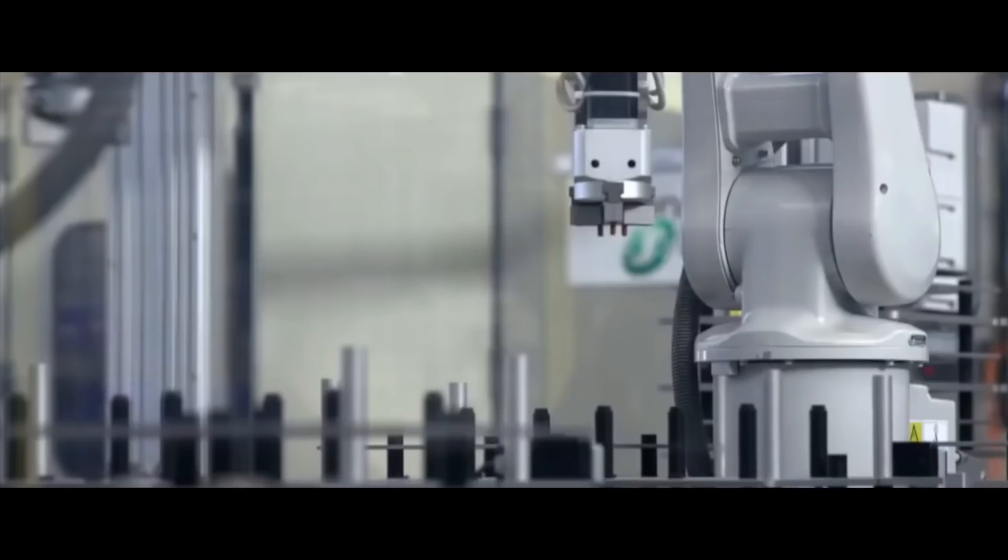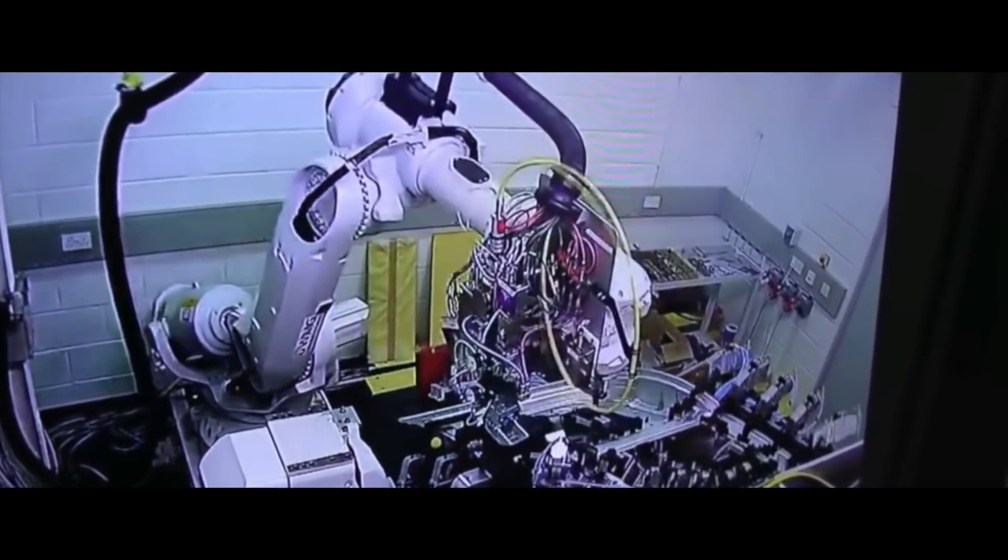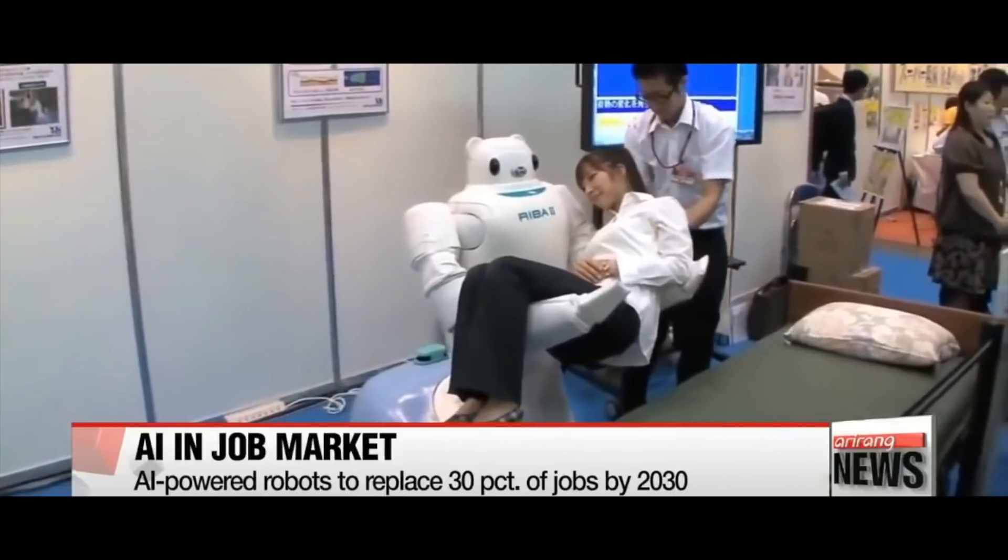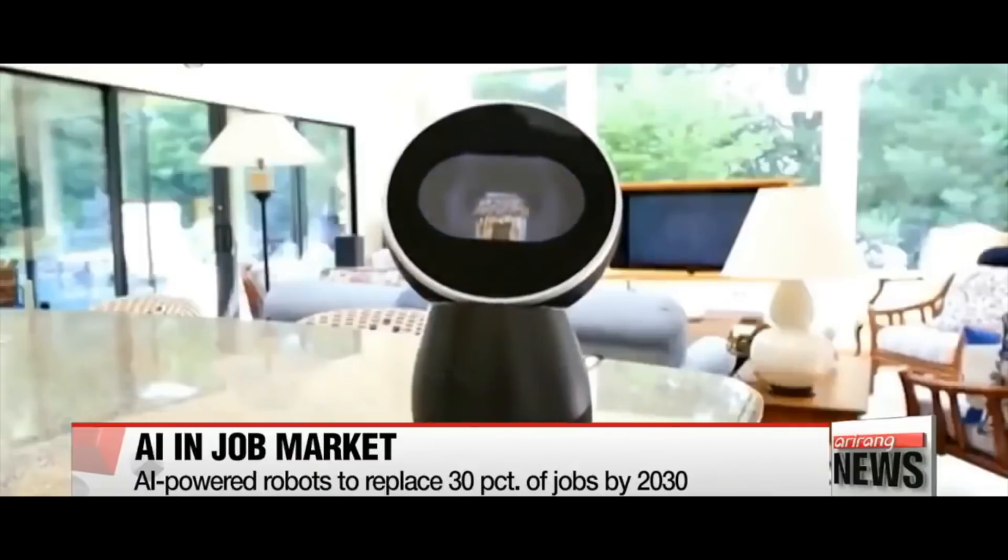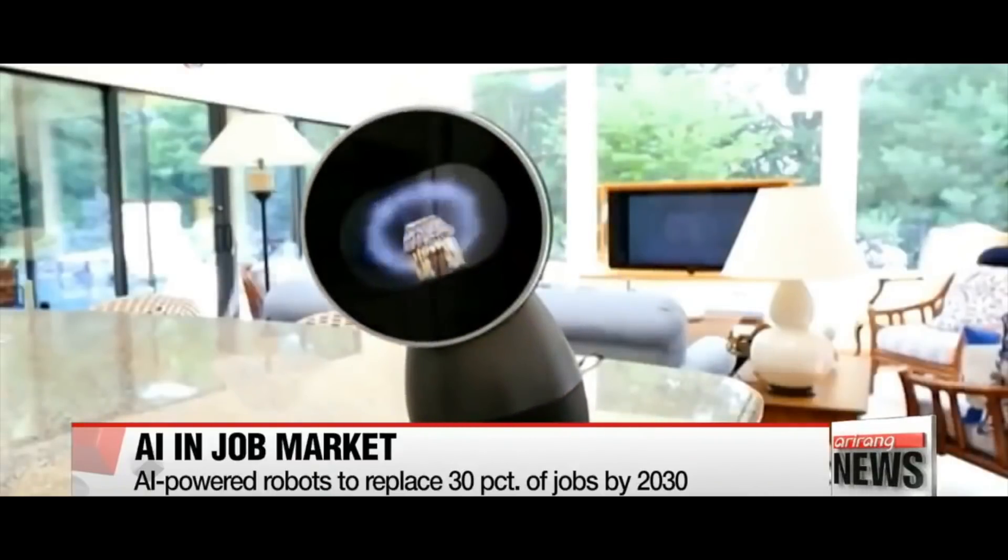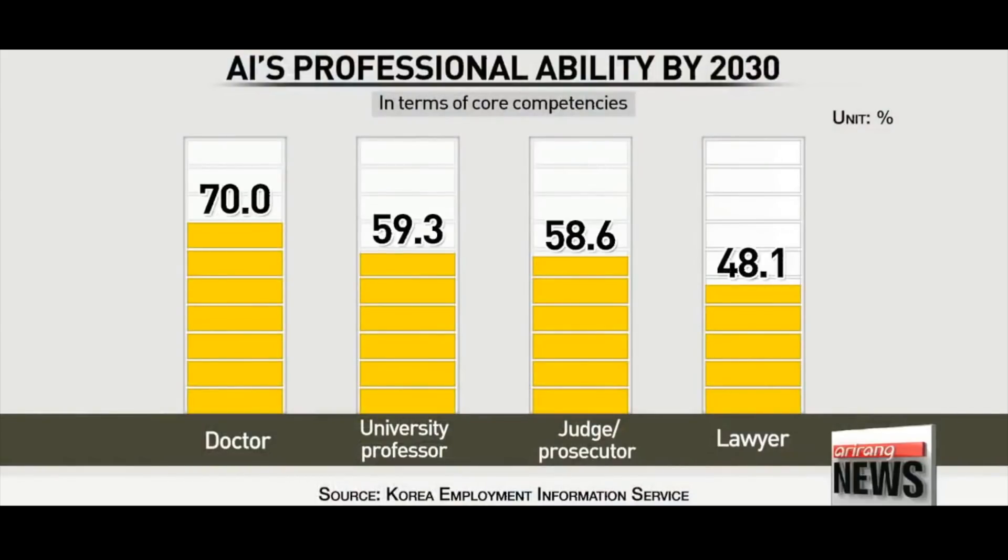It may sound a long way away. After all, at the moment robots only do one thing at a time, but what if one can do all the things that we can? It's expected that within about a generation from now, a machine will be built which is better than a human, and that changes everything. According to the Korea Employment Information Service, AI-powered robots will be able to replace 29.1% of the local job market. They were also competent enough to replace 70% of the duties performed by doctors, 59.3% of university professors' duties, and 48.1% of duties done by lawyers in Korea.